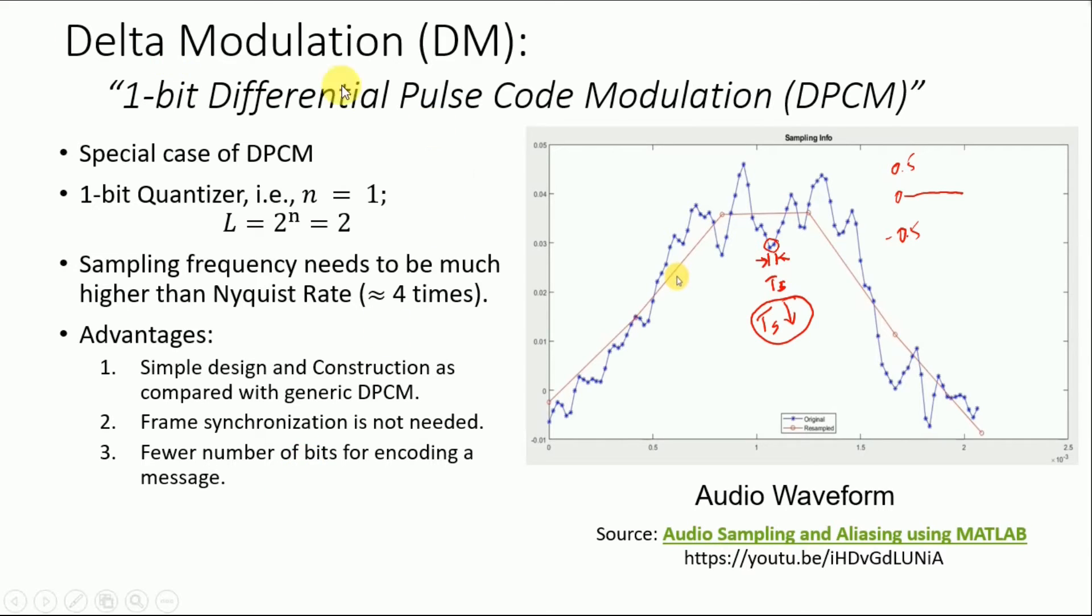For example, the step size of a comparator. As mentioned, we only have two levels based on which the quantizer needs to decide an input. So it should either put it to 0.5 value or minus 0.5 value.